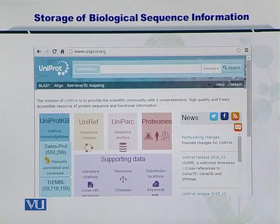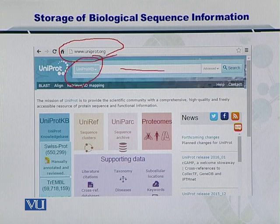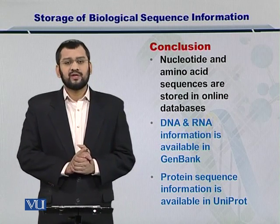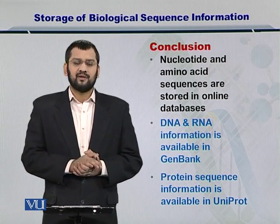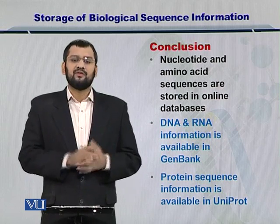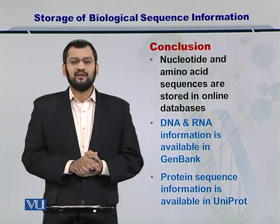This is the UniProt web page, which is also a publicly available database. UniProt stores the protein sequences, the post-translational modifications, and other related information. You can simply search it by providing the accession number for the protein or the sequence and other credentials. In conclusion, the nucleotide sequences, which include the DNA and RNAs, are publicly available for several species, and the database is GenBank. While for the proteins, several proteins have been sequenced and these hundreds of thousands of protein sequences are available in UniProt.